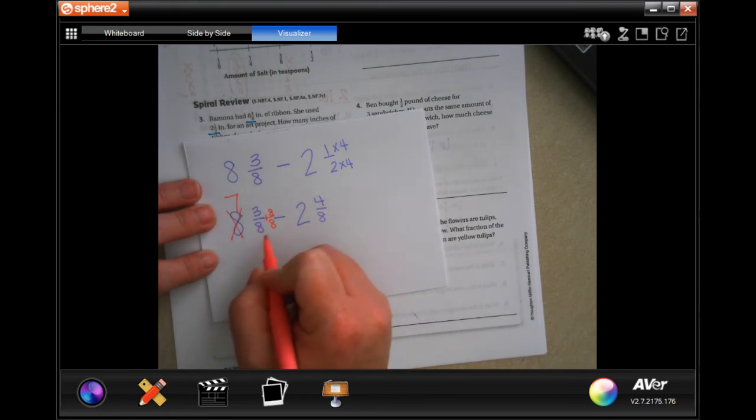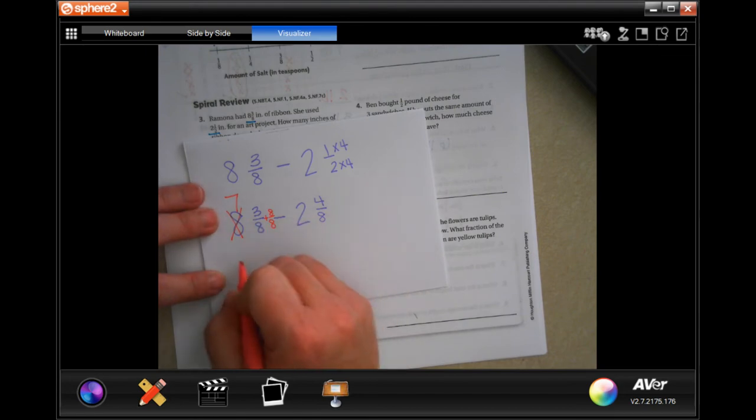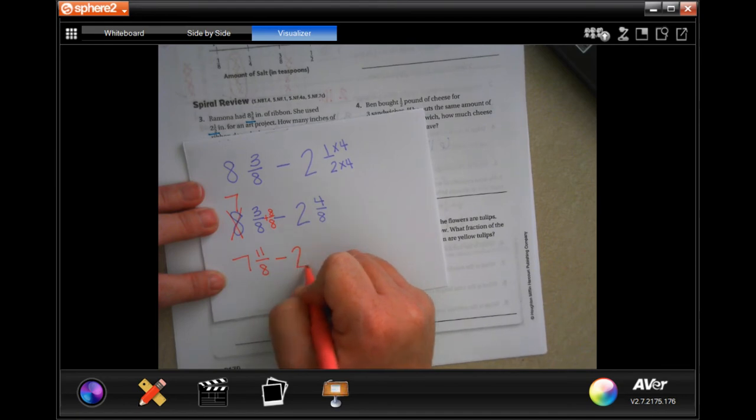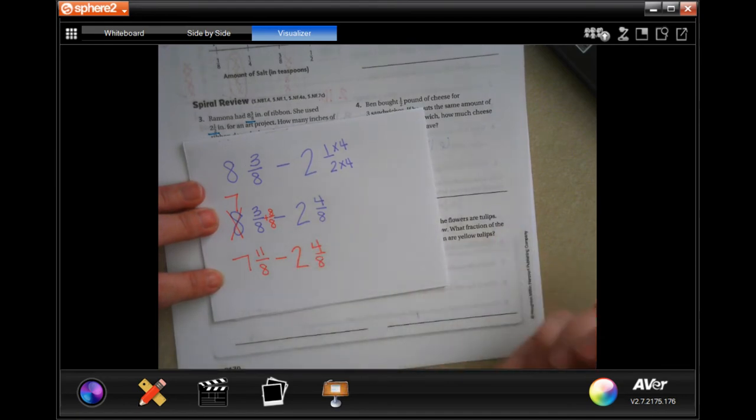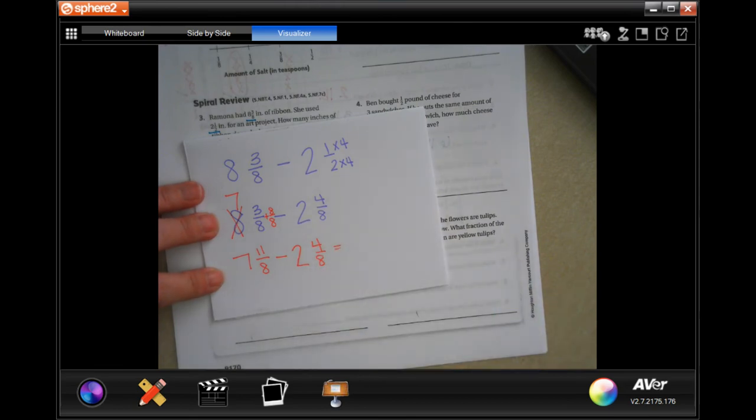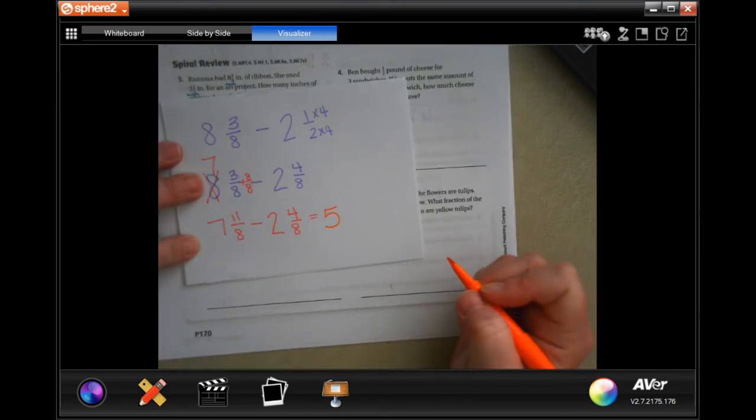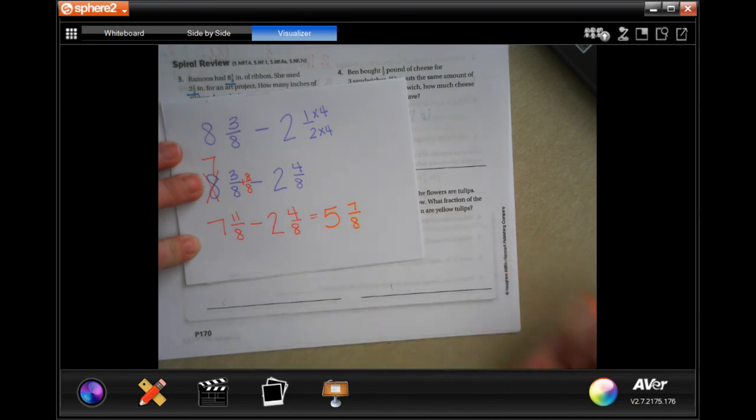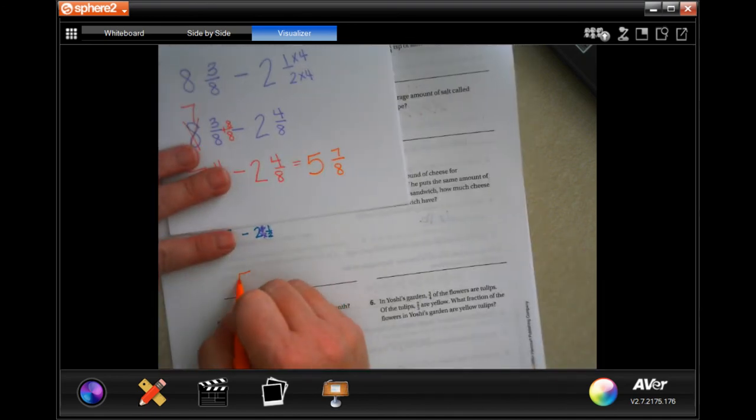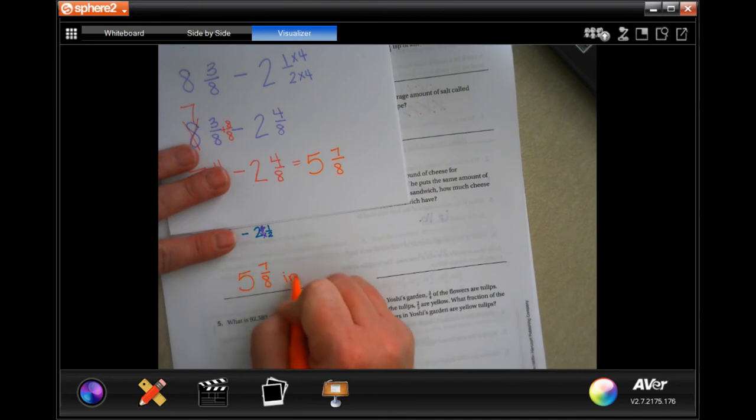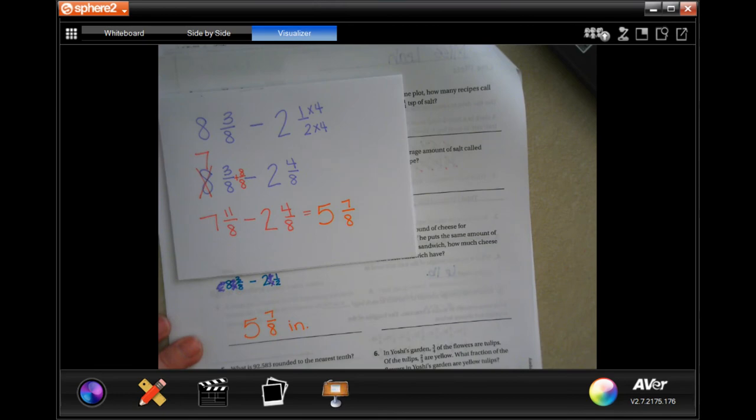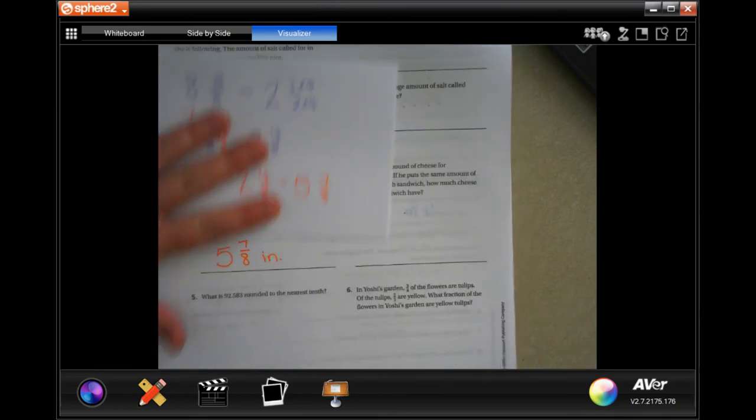The denominator stays the same. Now I'm going to have seven and eleven over eight minus two and four over eight. Seven minus two is five. Eleven minus four is seven. And my denominator stays the same. So five and seven eighths and what's being measured in inches. Make sure you're showing your work, guys. Not the dead man I did originally.